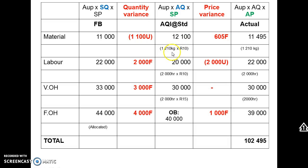For the price variance: the actual quantity of input is the same on both sides of the middle column, so only the price differs. The standard price is 10 Rand per kg; the actual price works out to 9 Rand 50 per kg — we saved 50 cents per kilogram. Multiplied by the actual number of kilograms used, this gives a favorable price variance of 605 Rand. We paid less per kilogram than the standard price, giving a favorable result.